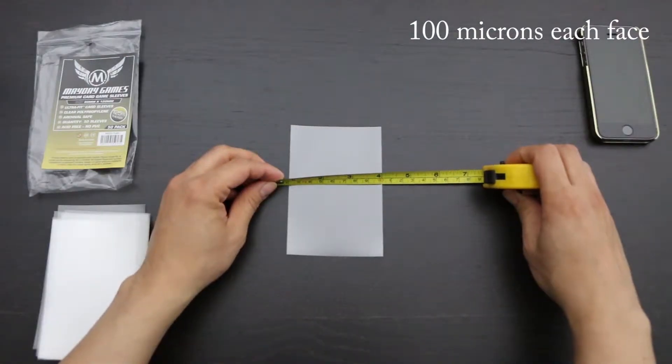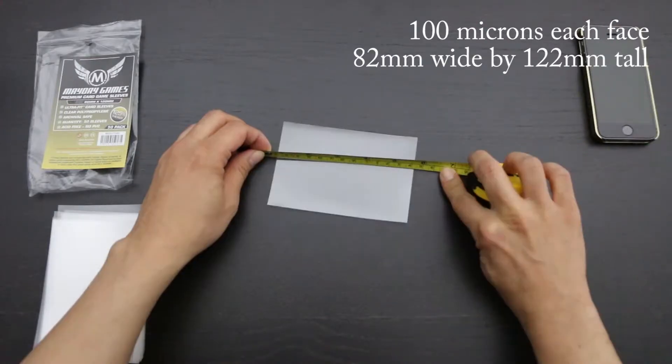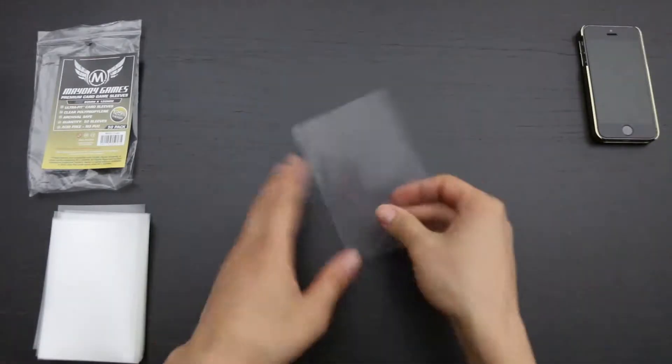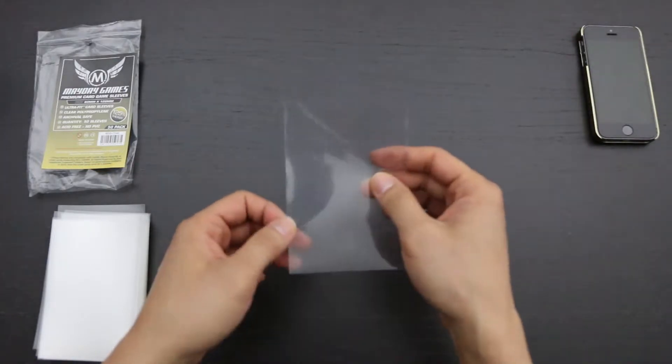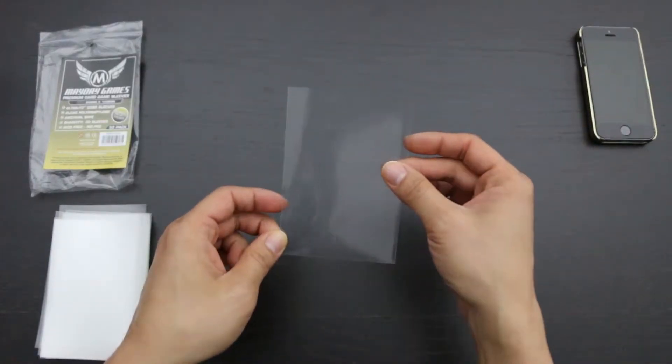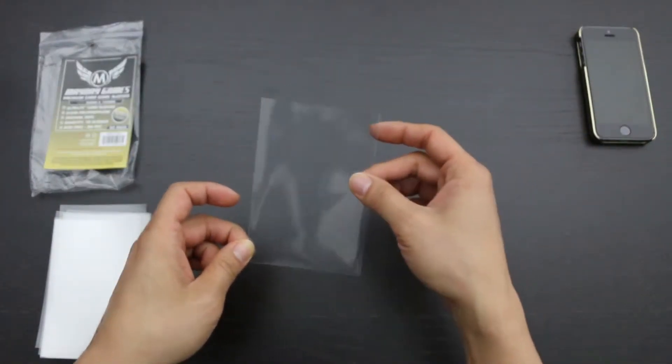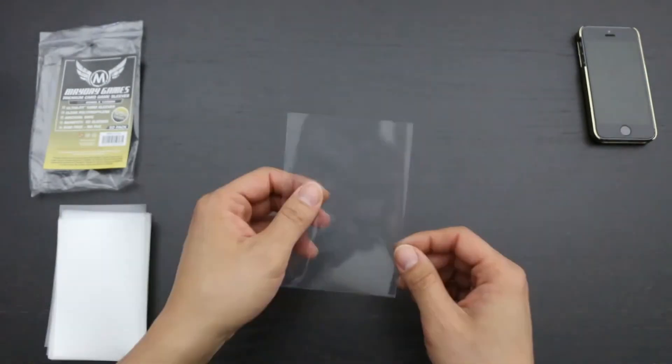Now let's check the dimensions. These sleeves are 82mm wide by 122mm tall. This is in keeping with the size of the Magnum soft sleeves. So, everything is as we expect with Meta Games.